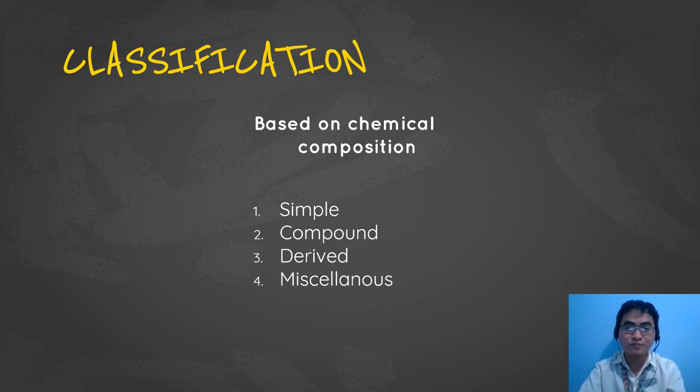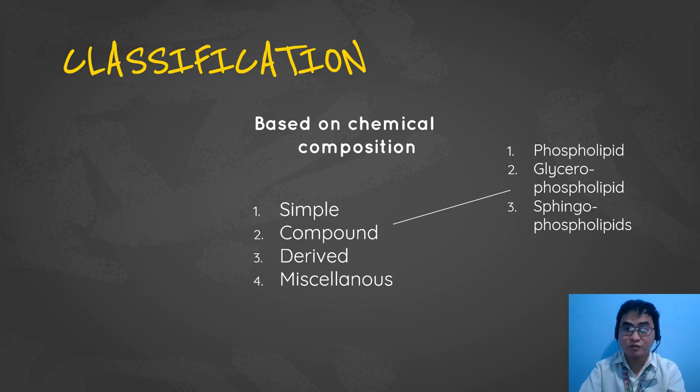The second one is compound lipids. Compound lipids are esters of fatty acids and alcohols containing additional groups. Kanina yung simple is no additional groups. The compound contains esters of fatty acids and alcohols containing additional groups. They are again divided into three types: one is phospholipids which means we have this lipid plus phosphorous group. We also have glycerophospholipids. And the last one is sphingophospholipids.